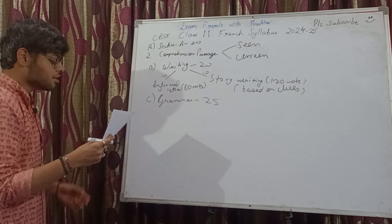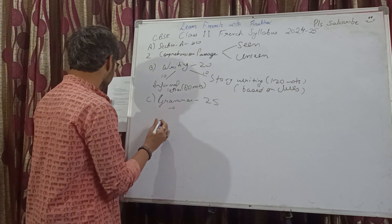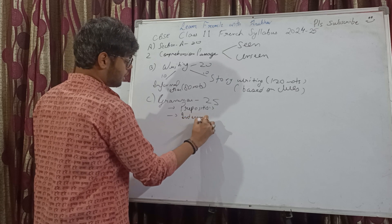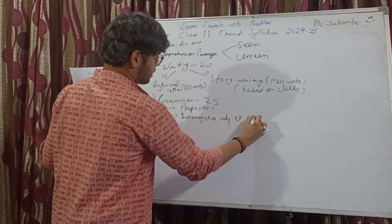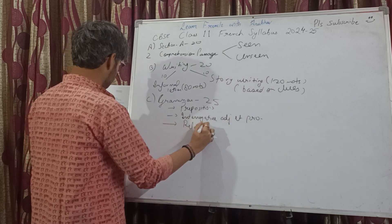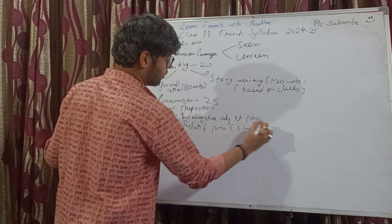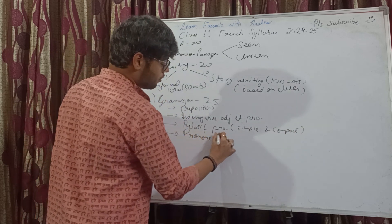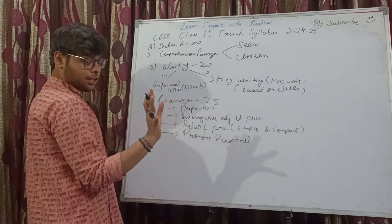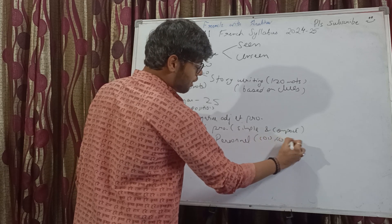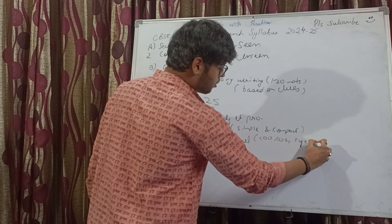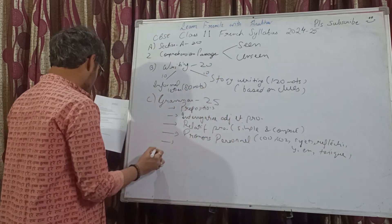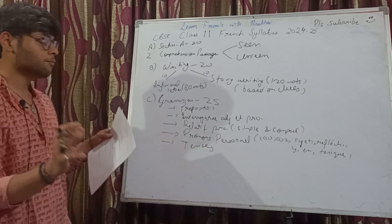There are five topics: prepositions, interrogative adjectives and pronouns, relative pronouns, and personal pronouns — both simple and compound. Since it's Class 11, the scope should be the full set of personal pronouns as per the CBSE curriculum: COD, COI, Sujet, Réfléchi, then 'En', 'On', and Tonic pronouns.